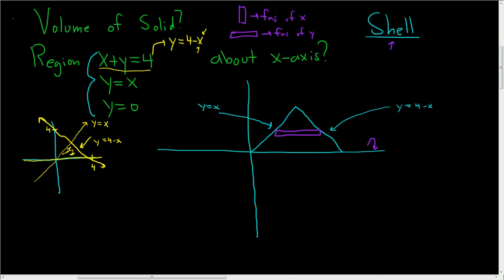All right, we need to find two things. We need to find h of y and p of y. So h of y is the length or the height of the longer part of the rectangle. And p of y is the distance from the skinny piece to the axis of revolution.